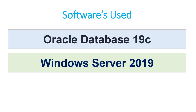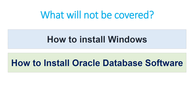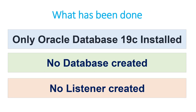Before I move on, I want to mention that I have a bad cold, so if you hear me coughing, I'm really sorry. What will not be covered in this tutorial is how to install Windows or how to install Oracle Database software. I have two machines set up — one for primary, one for standby — and both machines have the Oracle Database 19c software installed. There is no database created and no listener created. We will create everything from scratch in this tutorial.